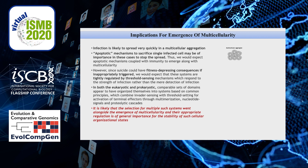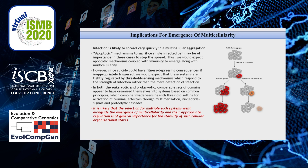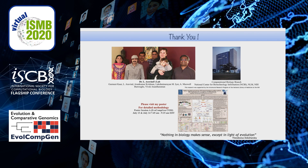To conclude, an infection is likely to spread very quickly in multicellular aggregates once a single cell catches the infection. Thus, apoptotic mechanisms to sacrifice a single infected cell are of general importance to multicellular bodies. However, apoptosis needs to be tightly regulated, and one such mechanism is threshold sensing. We observe a comparable set of domains organized into systems based on common principles in both eukaryotes and prokaryotes for this function. It is likely that the selection for multiple such systems went alongside the emergence of multicellularity, and their appropriate regulation is of general importance for the stability of such cellular organizational states. Thank you for your time, and I am happy to answer any questions now.